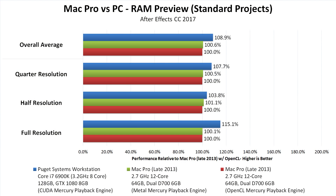Starting with the standard projects, there are a couple of things worth pointing out. The first is that there's not much of a performance difference between Metal and OpenCL on the Mac Pro. The second is that the performance difference between our PC and the Mac Pro changes quite a bit depending on the resolution of your previews. At full resolution, we saw about 15% performance gain on PC, while at half resolution it was only 4%, and at quarter resolution it was about 8%. This averages out to about a 9% performance gain by using the PC over the Mac Pro.